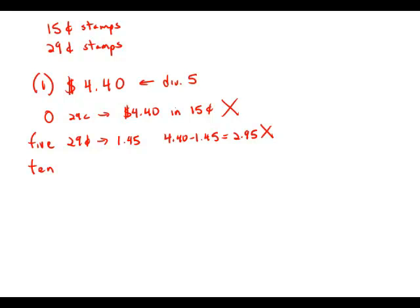Next possibility, if we buy 10 $0.29 stamps, that would be $2.90, and $4.40 minus $2.90 is conveniently $1.50. And we can buy $1.50 worth of $0.15 stamps. So this case works. So we'll keep that in mind. That's one case that definitely works.